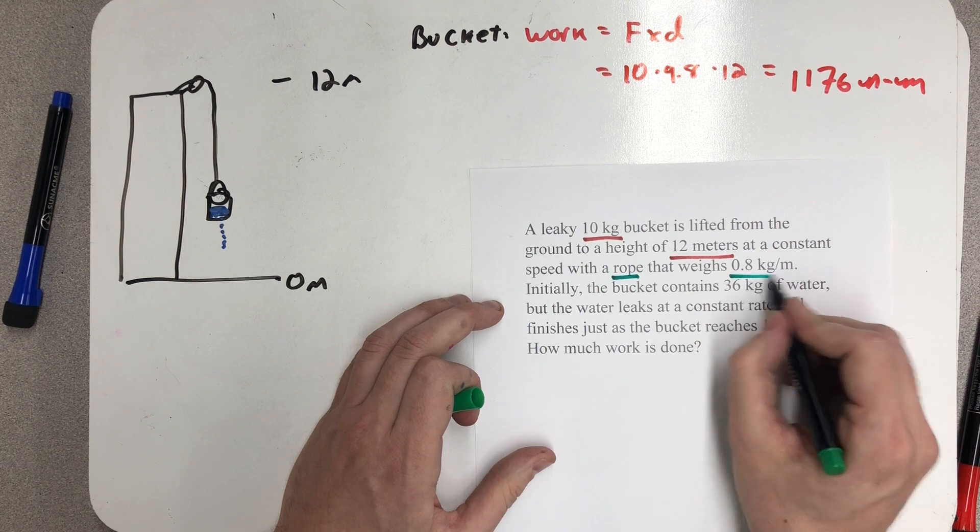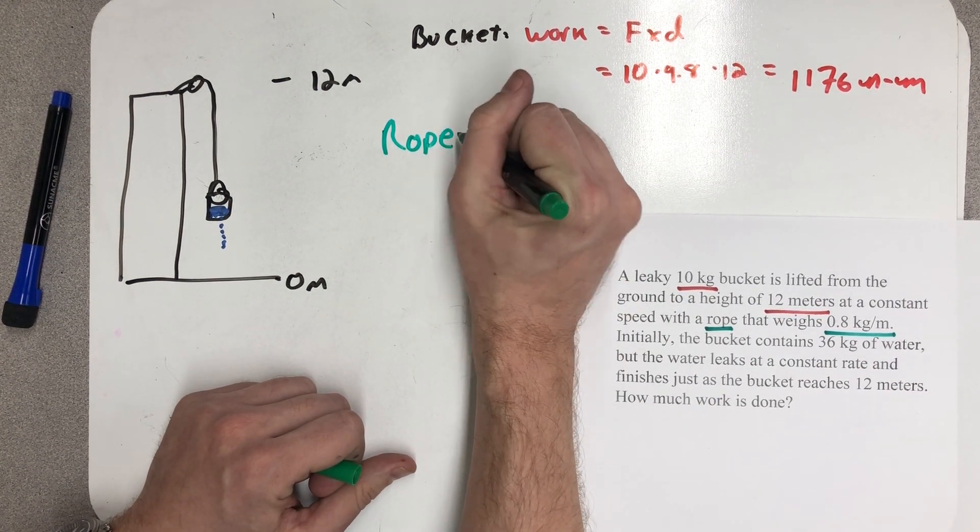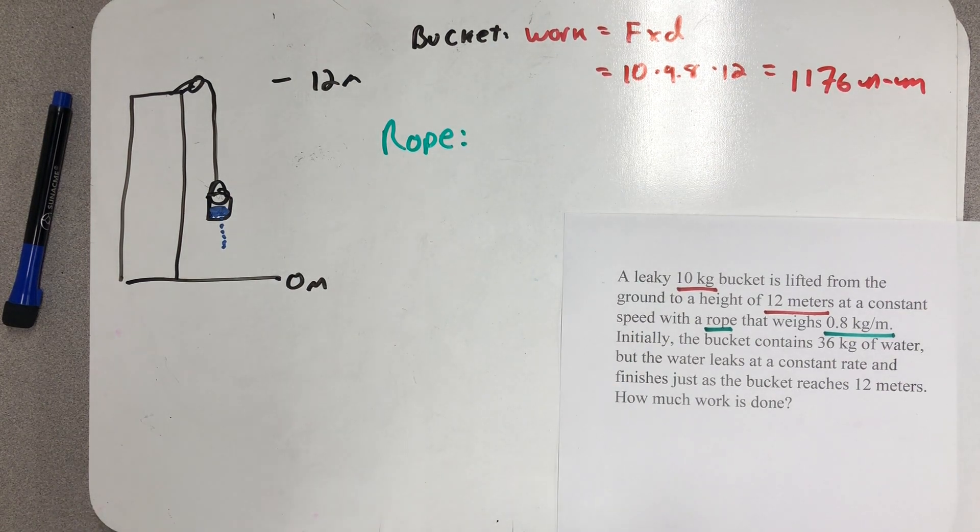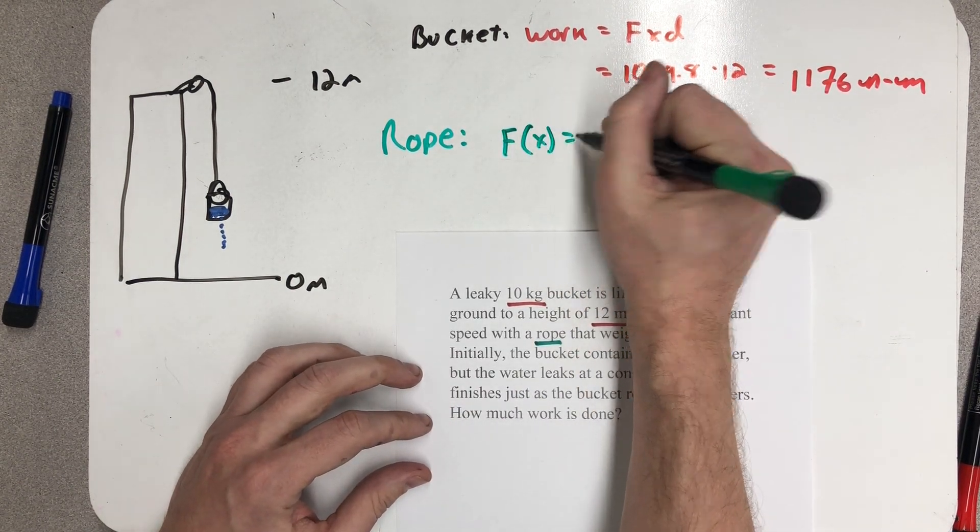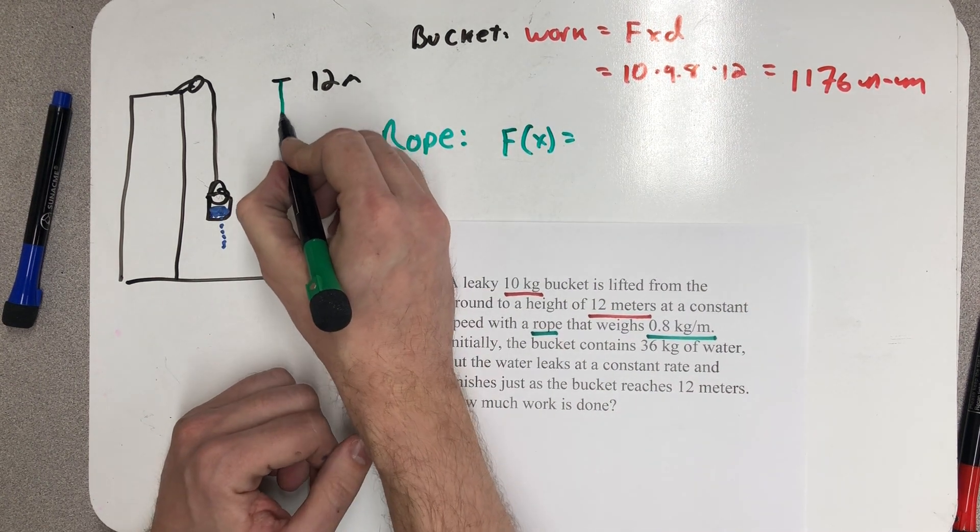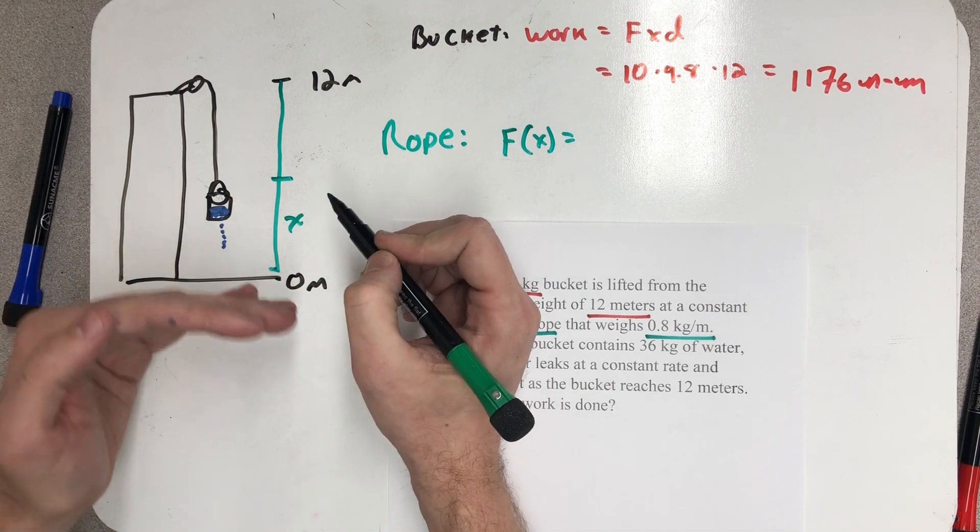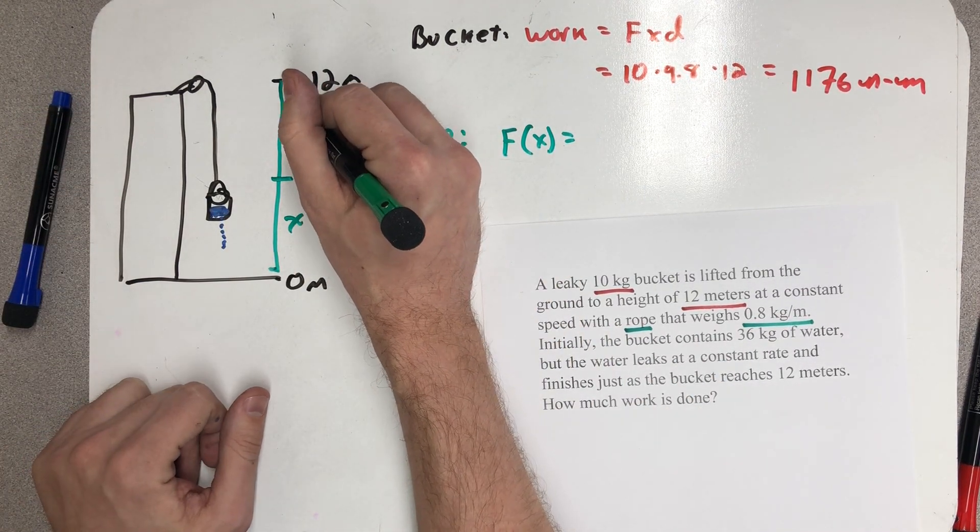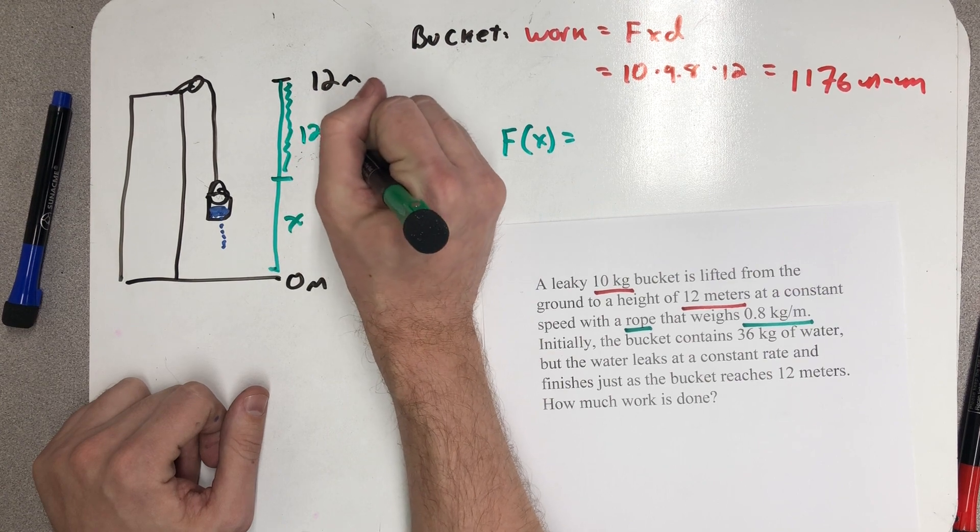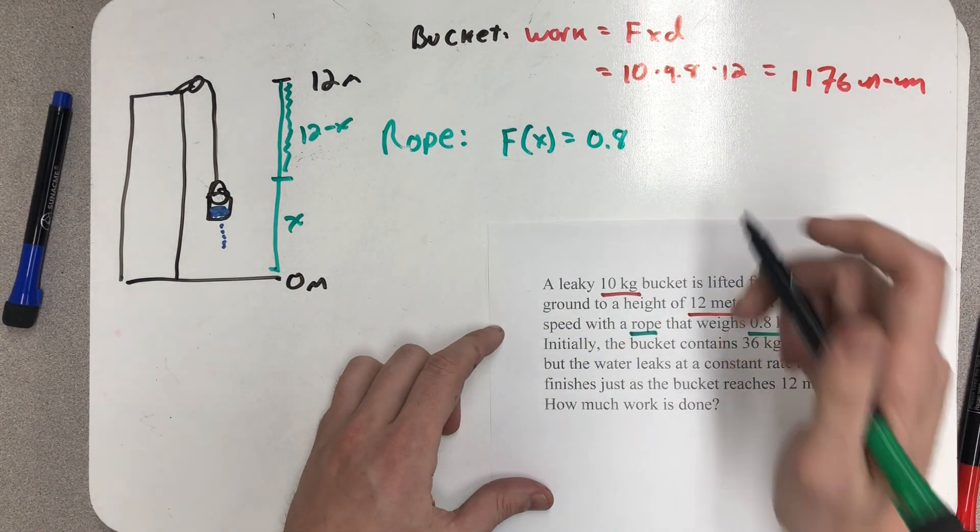Let's see if we can calculate the work done by the rope. All right, well I need a force function. This is a variable force because there's different amounts of rope out at different moments. When the bucket's risen x meters, the amount of rope out is 12 minus x.